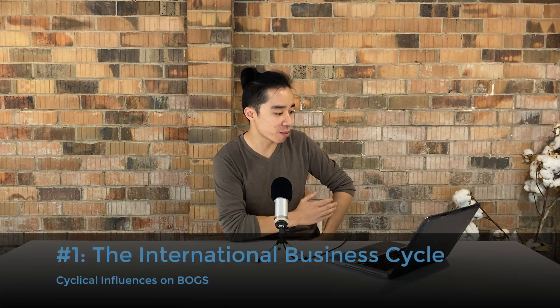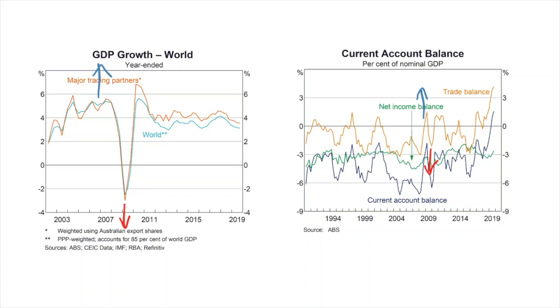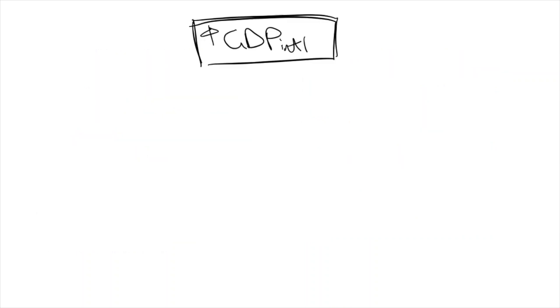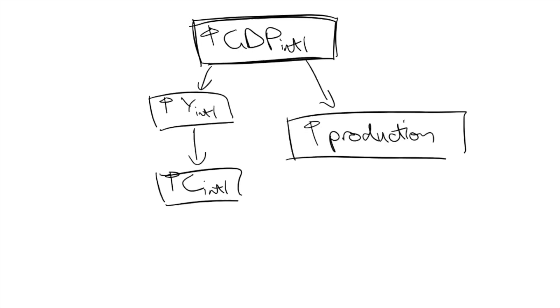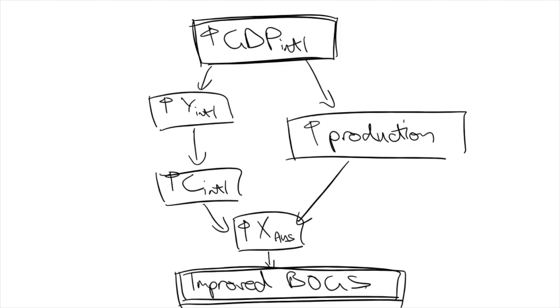The first cyclical influence is the international business cycle, particularly the economic activity of our trading partners. If you look at their GDP growth alongside our BOGS, you'll see a strong correlation. In 2010 and 2011, their GDP growth rates peaked, and this is also where our BOGS went to surplus. Conversely, when GDP growth slowed after this period, you could see BOGS deteriorate back into deficit. This is because when our trading partners are experiencing growth, they have increases in disposable income and production, which means they will purchase more Australian exports, leading to more credits in our BOGS account.